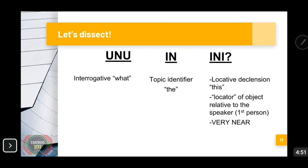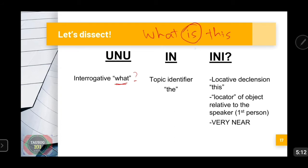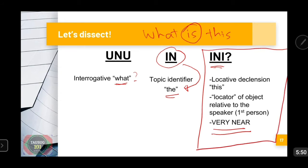Let's dissect the question 'Uno in ini.' The word 'uno' is the equivalent of the English interrogative word 'what.' 'In' is the topic identifier. Although the translation in English is 'what is this,' the Sinug language has no equivalent of the verb 'to be' — is. We use 'in,' and 'in' is actually a topic identifier, which is the equivalent of the English article 'the.' 'Ini' is a locative declension, meaning it is a locator of an object — it tells you where that particular object is relative to the first person, which is also the speaker. So 'ini' signifies that the object being referred to is very near.